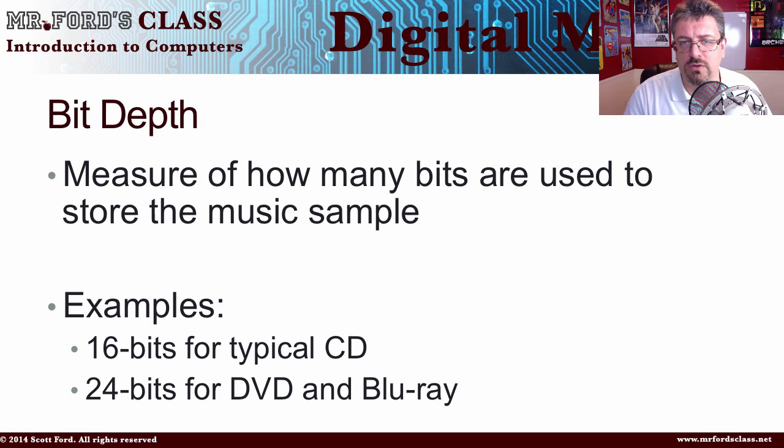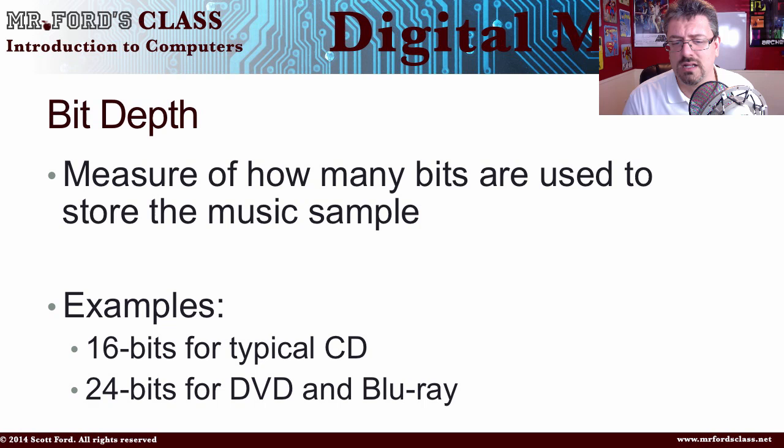Bit depth is a measure of how many bits are used to store the music sample — the number of characteristics of a particular sound for each sample, meaning how much information we're storing about that sound file. A 16-bit depth is your typical CD quality. 24-bit is what DVDs and Blu-rays use for their audio sampling, which is where you get your surround sound and really rich sound from movies.